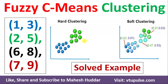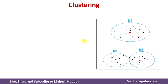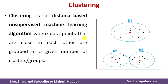Before we proceed with fuzzy c-means clustering algorithm, first we will understand what is clustering. Clustering is a distance-based unsupervised machine learning algorithm where the data points that are close to each other are grouped into a given number of clusters or groups. In this case, you can notice the given data points are divided into three clusters here.